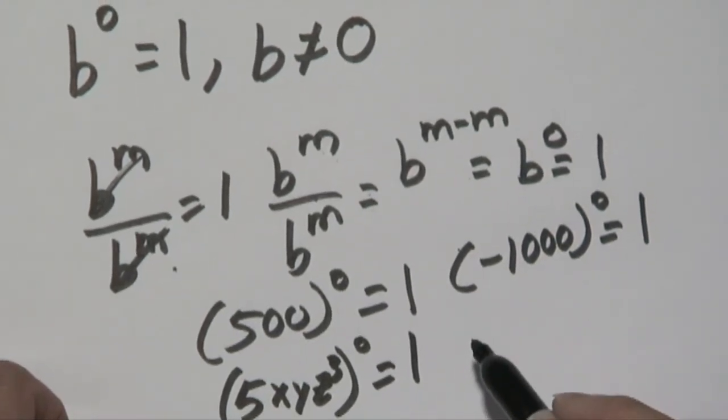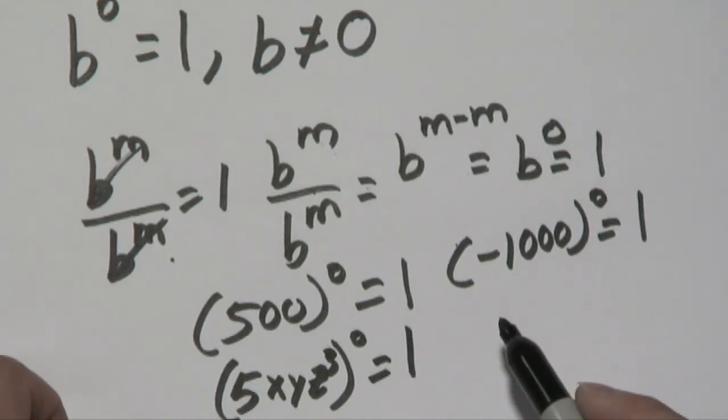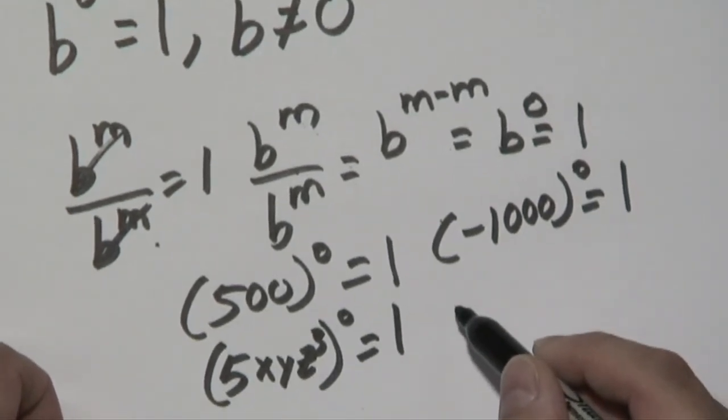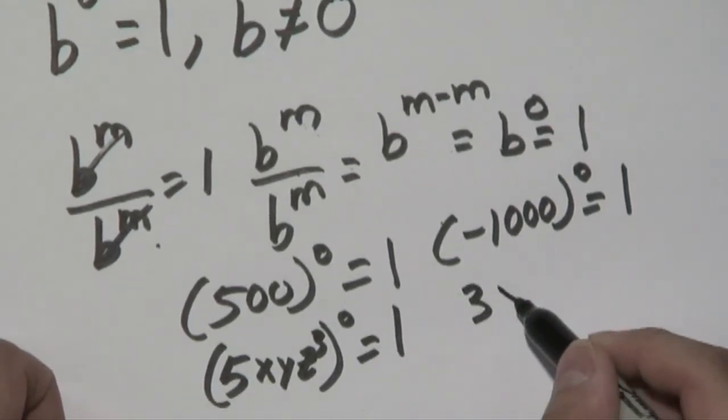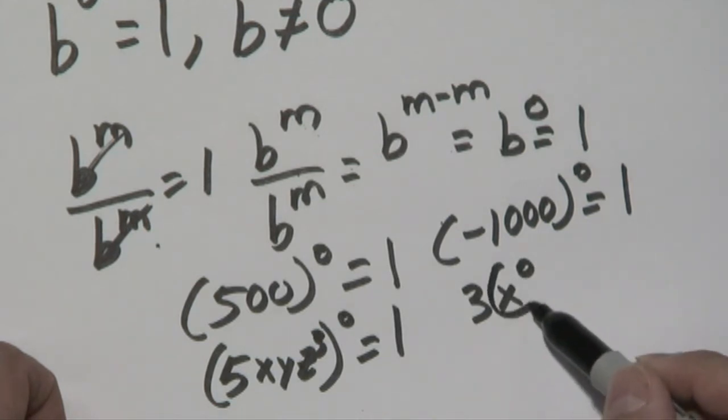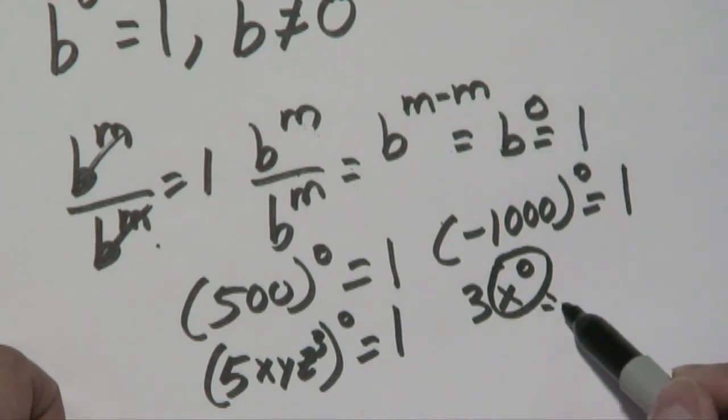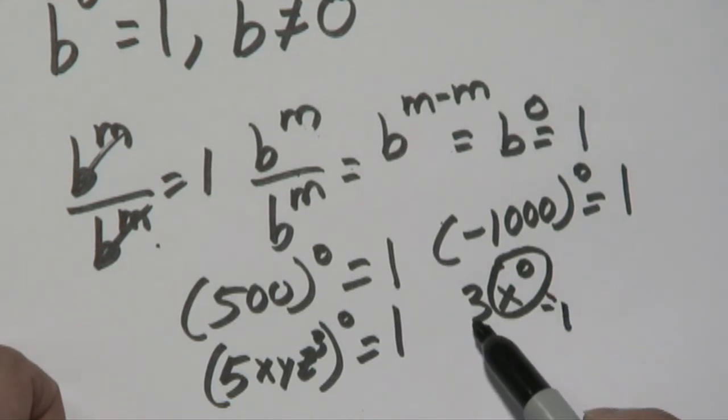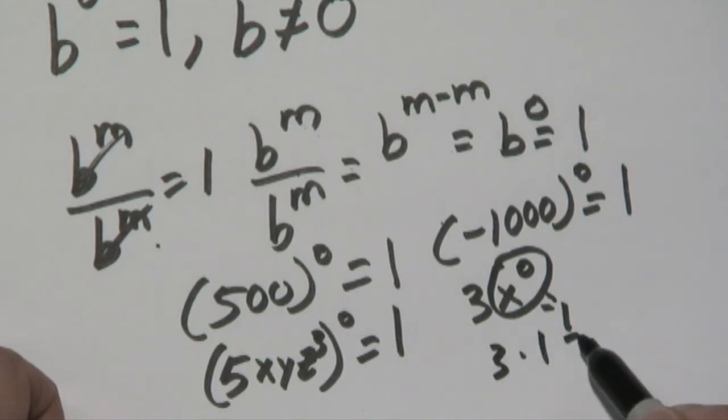What you have to be careful of though for zero exponents is where the parentheses would be. If you had something like 3x to the zero, that's what you have to be careful. There's a difference between this and parentheses. Notice there aren't any. So what you have to do is evaluate this first, x to the zero, that's going to give you one. And so what you really have to do is 3 times 1, which is going to give you 3.